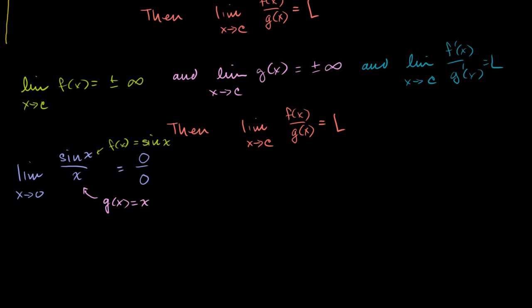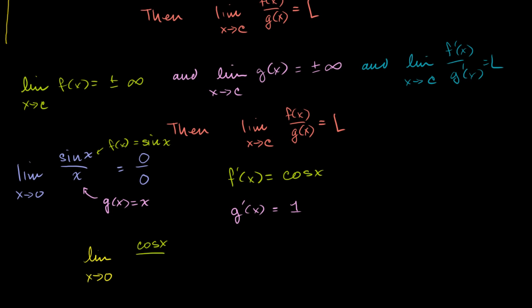Let me write the derivatives of the two functions. If f(x) is sine of x, then f′(x) is just cosine of x — we've learned that many times. And if g(x) is x, then g′(x) is just 1. So let's try to take the limit as x approaches 0 of f′(x) over g′(x) — that's going to be the limit as x approaches 0 of cosine of x over 1. As x approaches 0, cosine of x equals 1, and obviously the limit of 1 is also 1.